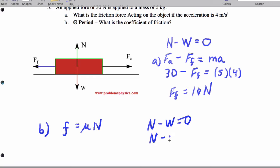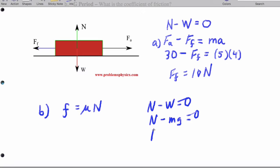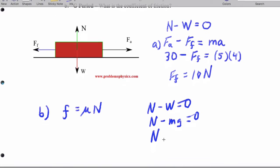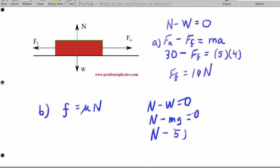So the normal minus Mg equals zero. So our normal force minus 5 times 10, because that's M times G, equals zero. So we're going to end up getting a normal force of 50 newtons.